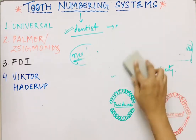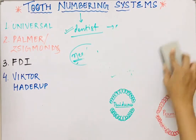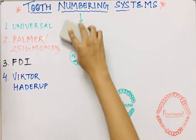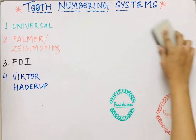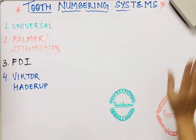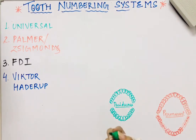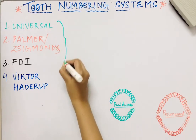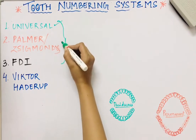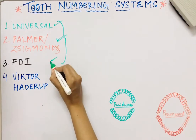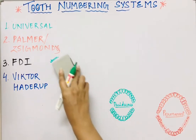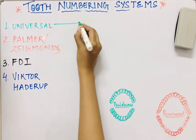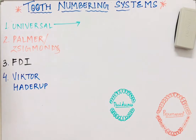There are numerous tooth numbering systems given by different scientists, with different notations assigned to different teeth. The three most widely accepted and most popular systems are: the Universal system, the Palmer or Zygmonde system, and the FDI system.